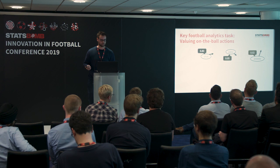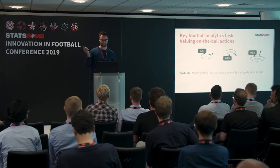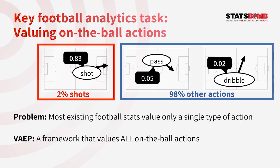This talk is about valuing on-the-ball actions. The problem is that most existing football stats value only a single type of action — the perfect example being expected goals. If you're focusing on expected goals, you're using about 2% of your data and ignoring the other 98%. So the question is: can we find a way to value all actions?